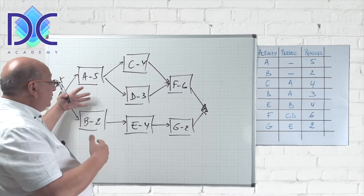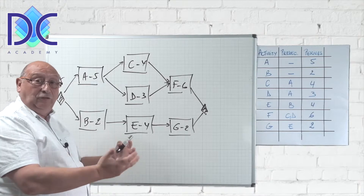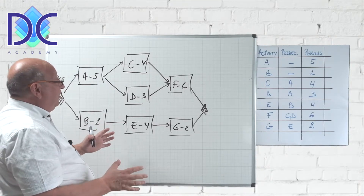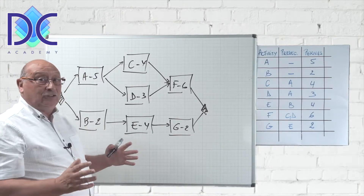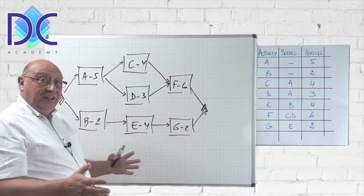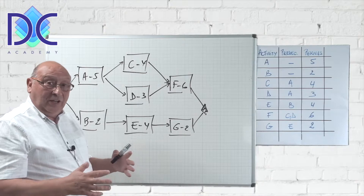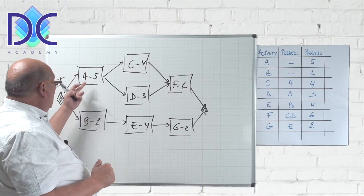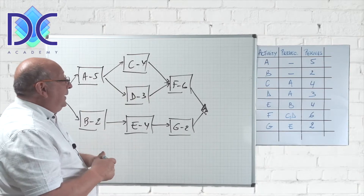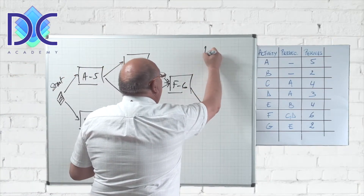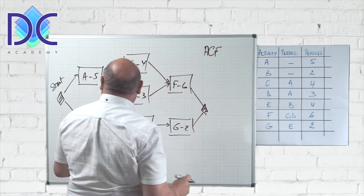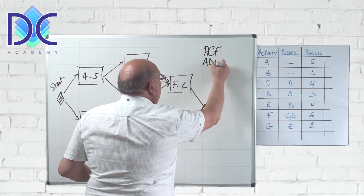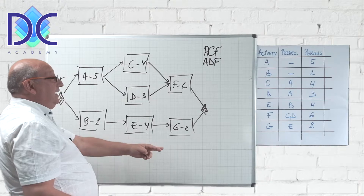Instead of doing the forward pass and backward pass, we are going to identify the paths through the network. The paths we have in this schedule are: A–C–F, A–D–F, and B–E–G.